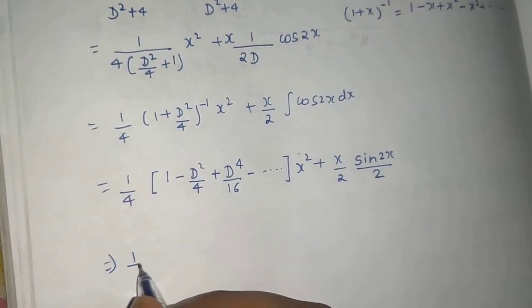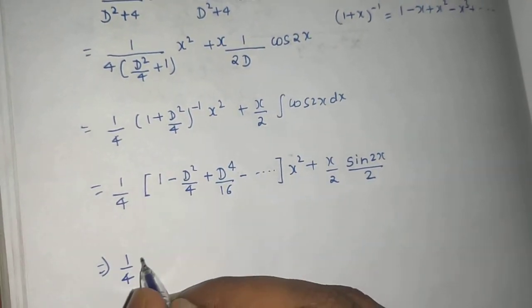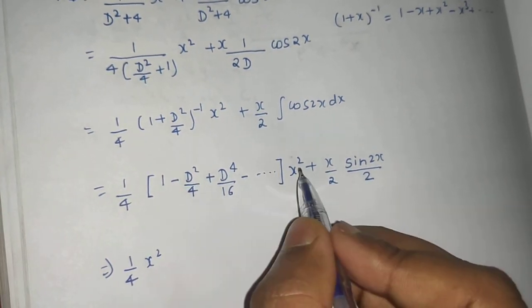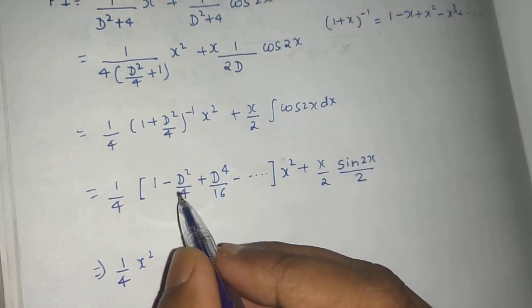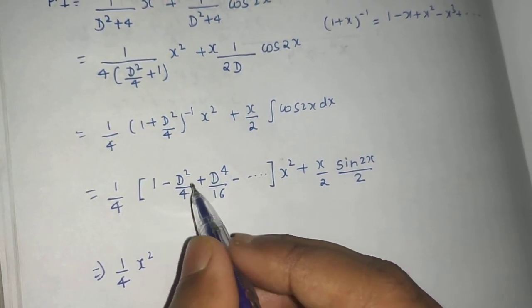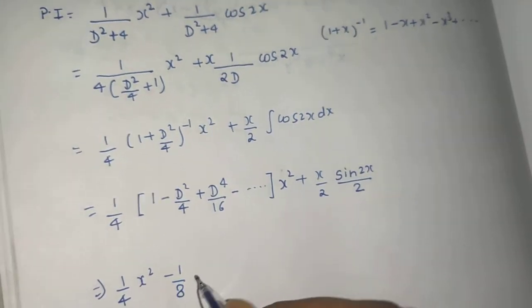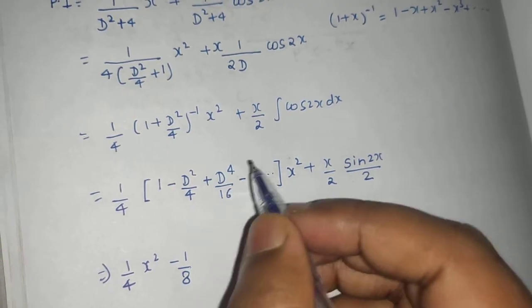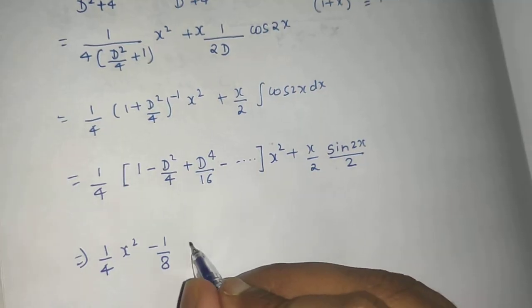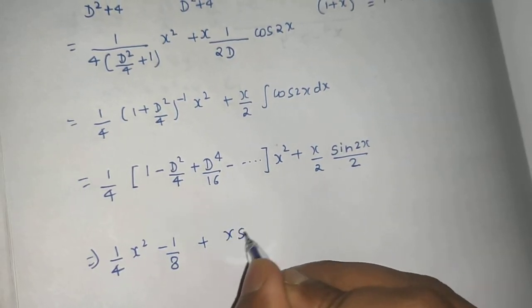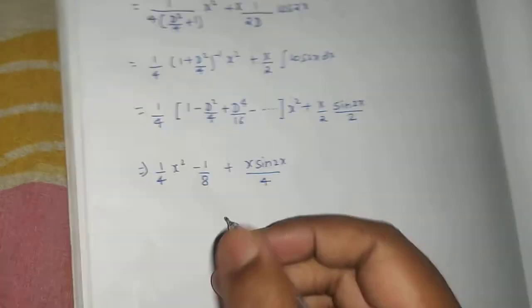Now this is 1/4 multiplied by 1 multiplied by x². Now first derivative is 2x. Second derivative is 2. So -2/4 that means -1/2, -1/2 multiplied by this. So -1/8. Fourth derivative is anyway going to be 0. So you are getting this 2x. So you are getting 2 terms from this first and plus (x·sin2x)/4. This is your entire complementary function.